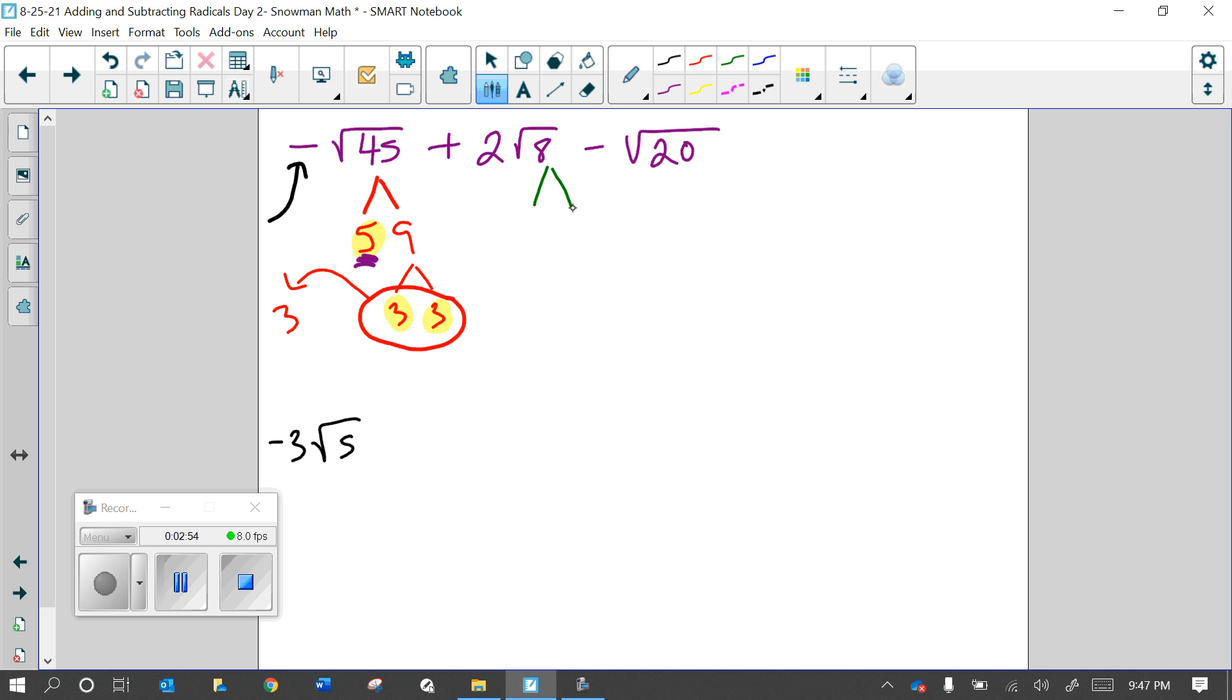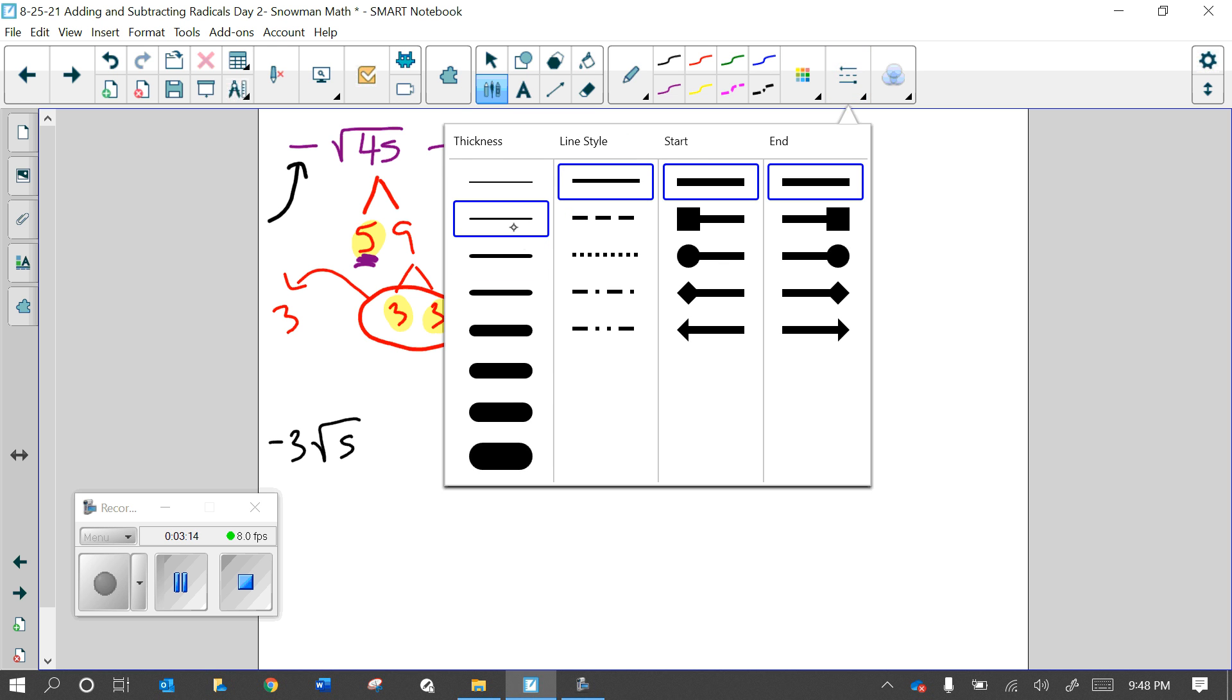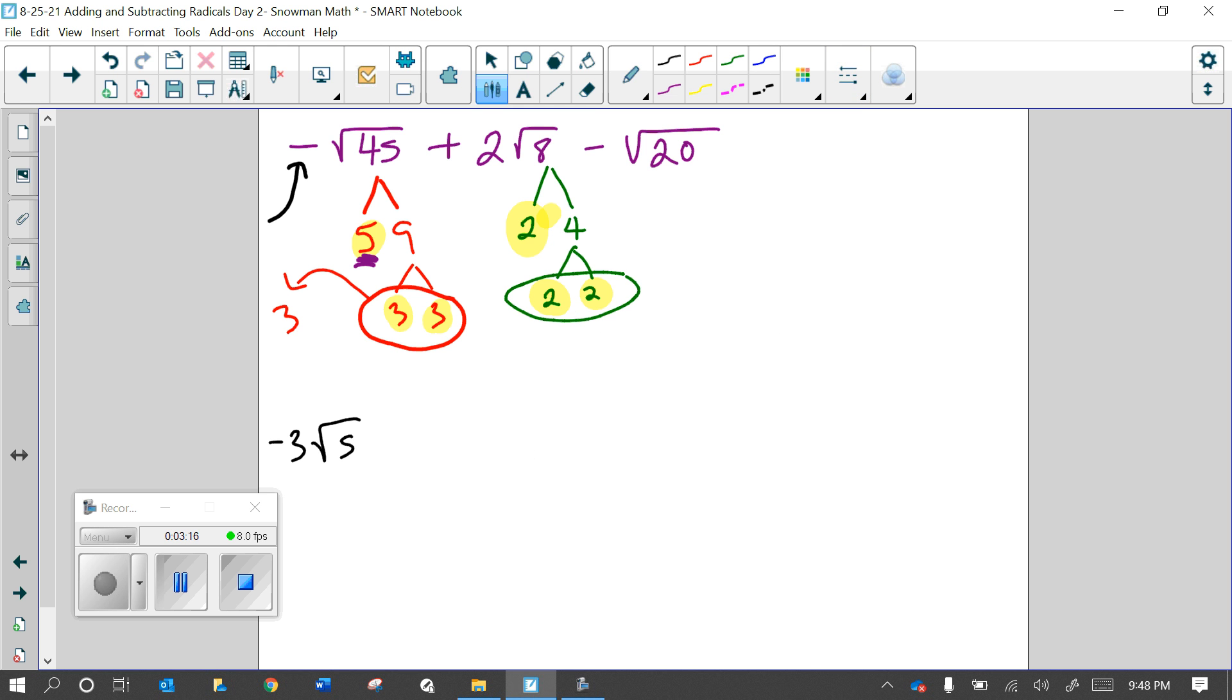So let's reduce square root of 8. Square root of 8 can reduce as 2 times 4. 4 can break down as 2 times 2. So the prime numbers we are left with are 2, 2, and 2. So it looks like we have a pair of 2's. That means one 2's going to come out of the radical, going to be on the outside, and then we have this other 2 that just stays on the inside.